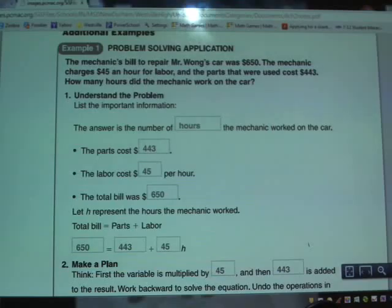The total bill is equal to the parts plus labor, and we're going to let H represent the hours worked. So we have $650 equals $443 plus $45H. Yes, it is written a little bit backwards, which is something we'll address here in a minute.